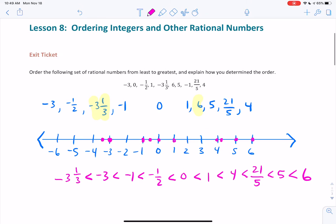So this was Module 3, Lesson 8, Ordering Integers and Other Rational Numbers. I used a number line to support ordering numbers, which includes negative integers, negative rational numbers, positive rational numbers including integers, and 0. And then I used the less than symbol in order to show the ordering of numbers from least to greatest.